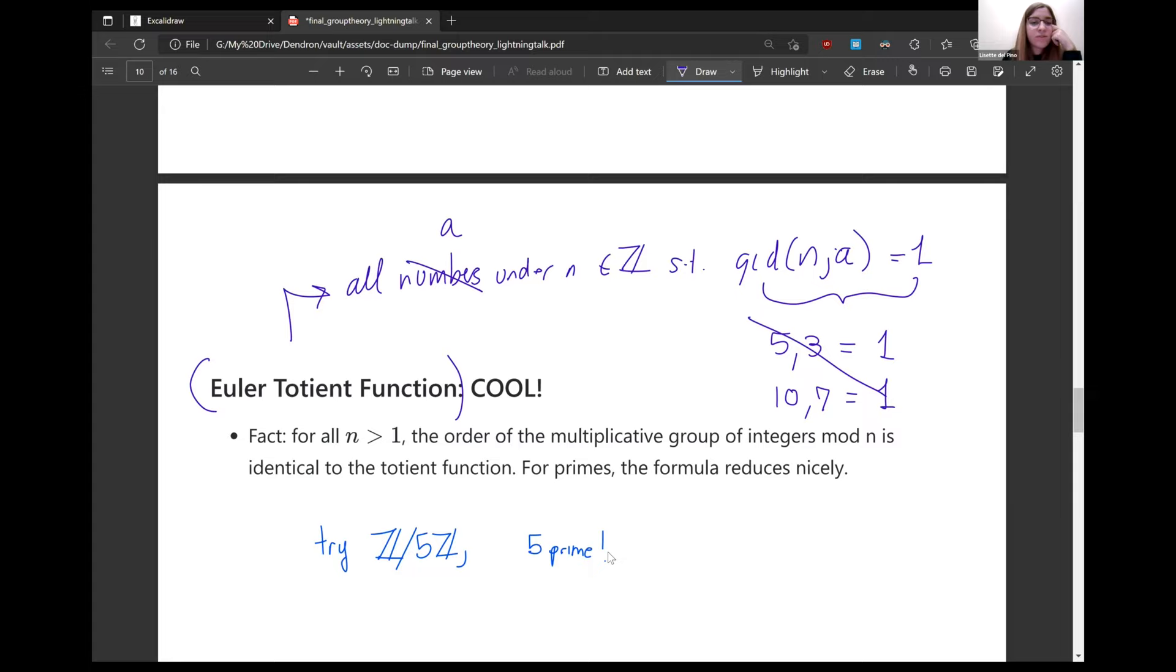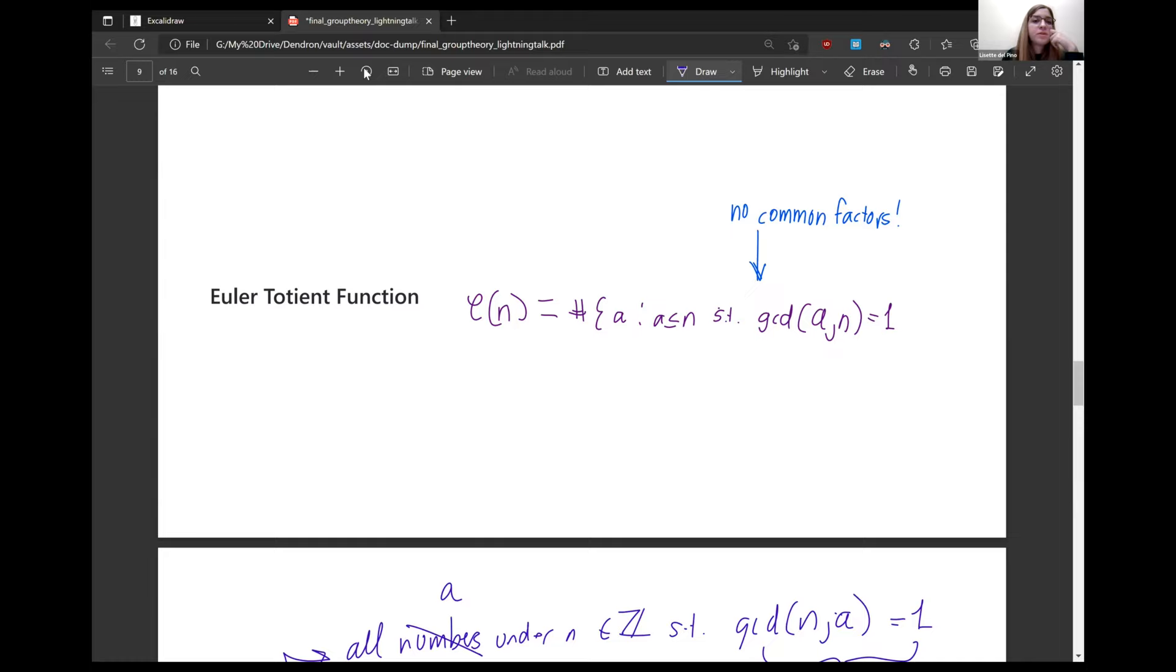So Euler comes along, like he does into every field in math, and he says, have you noticed that if you define this function, the Euler-Totient function, which counts all numbers under a certain number that are relatively prime to that number, you get the number of elements in all of these groups that you've come up with. So Z mod 4Z, to figure out the number of elements in this group, you just count all the things that are relatively prime to 4.